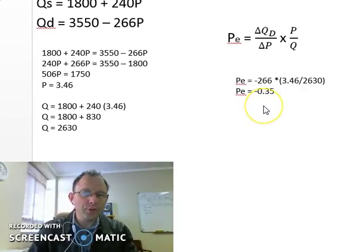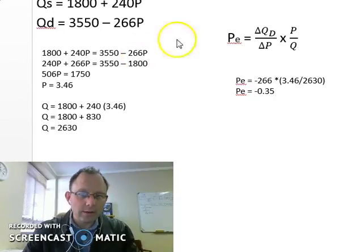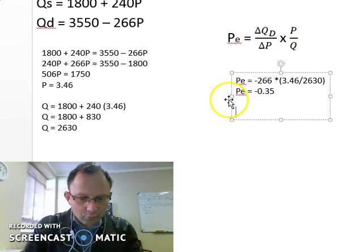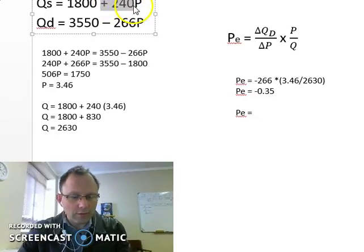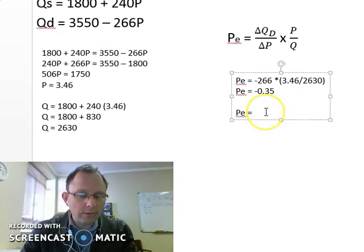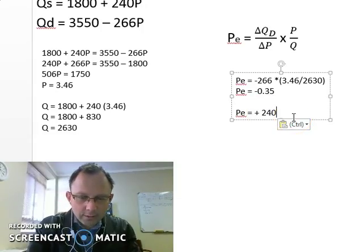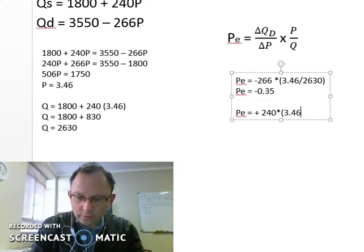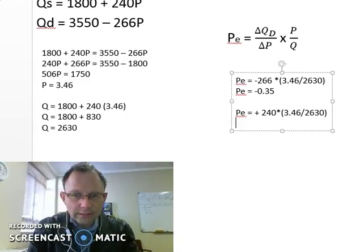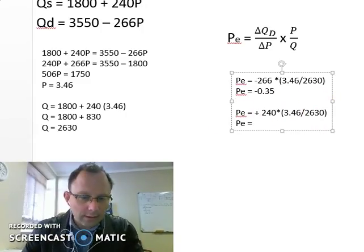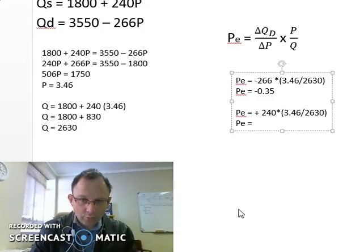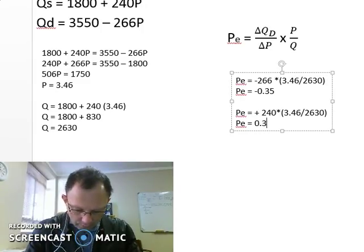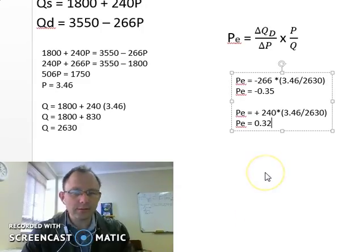To determine the price elasticity of supply, we use the same principle — we just use the inverse of the slope of the supply curve instead, which is the coefficient 240. So price elasticity of supply equals 240 × (3.46 / 2630), which gives approximately 0.32. It's a positive value, as expected for price elasticity of supply.